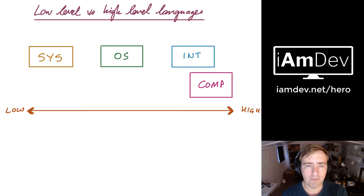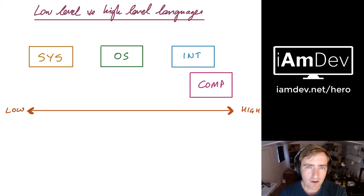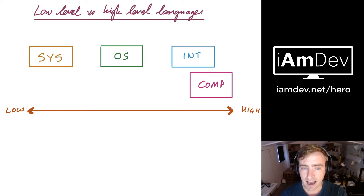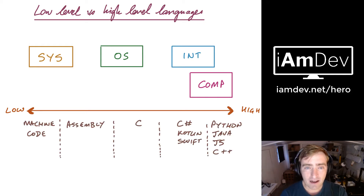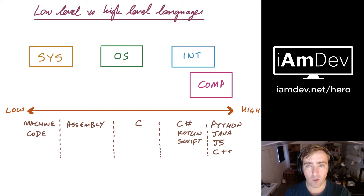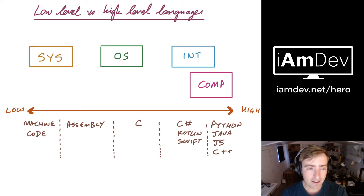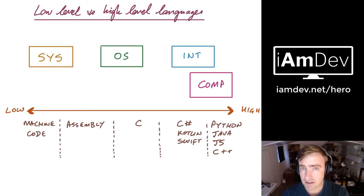And that's the root of the name low level versus high level. The system itself — the processor and the RAM — will understand machine code: zeros and ones basically, or hexadecimal code. You can write in machine code if you're crazy, but it can be done. And that's the way it was done when all of this started, which was decades and decades ago.